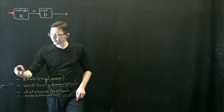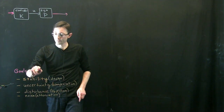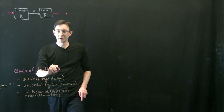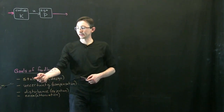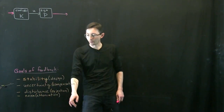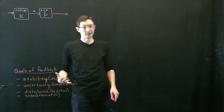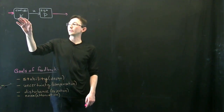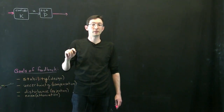Here are some of our goals of feedback. I like thinking about these in terms of active verbs. I want to design my system for stability. I want to compensate for model uncertainty. I want to reject disturbances. And I want to attenuate noise in my system. We're going to find that we're able to look at all of those in terms of properties of this simple loop transfer function.